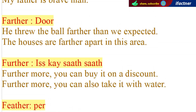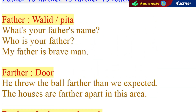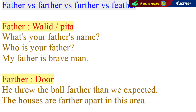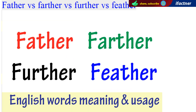Doostoon, ummeed hai ke aapko English ke yeh chaar words jo hum nay dekhe hain — jin mein shamil hain father, feather, further, aur farther — ke meaning samaj aa gaye hongay. Ab time hua hai exercise ka. Exercise ke toor peh aap nay yeh jo English ke chaar words hain, in mein se do words ko use kerna hai aur do chhotay chotay sentences banaa ke neechay diye gaye comments box mein post kar dena hai. Mein aap ko check ker ke bataunga ke un sentences mein koi galti toh nahi.